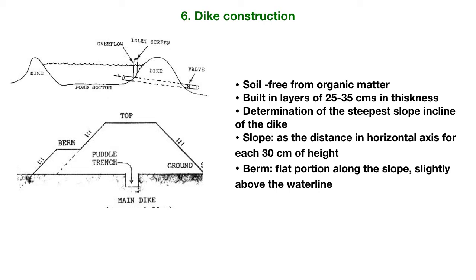When constructing a dike, it is necessary to determine the steepest slope inclination that will ensure long-term stability. Dikes are sloped on both the inner (water) side and the outside, with a flat top surface. The slope depends on the quality of the filling material and is technically defined as the horizontal distance for each 30 centimeters of height. Sometimes a nearly flat portion called a berm is built along the base of the slope, slightly above the water line, to balance the weight of the dike and minimize the effect of wave action on the inner side.